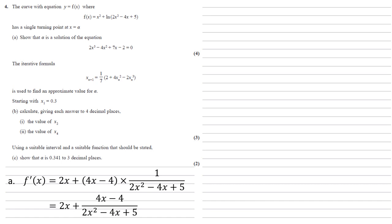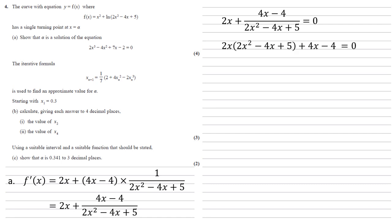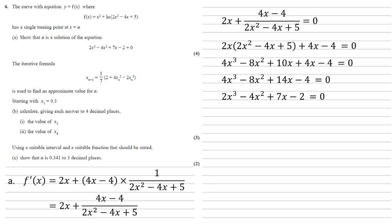Since this is a turning point, we set f'(x) equal to 0. Multiplying through by 2x squared minus 4x plus 5 gives us 2x times (2x squared minus 4x plus 5) plus the numerator 4x minus 4, still equal to 0. Expanding the bracket and collecting like terms gives 4x cubed minus 8x squared plus 14x minus 4 equals 0. Each coefficient is even, so dividing by 2 gives 2x cubed minus 4x squared plus 7x minus 2 equals 0, as required.